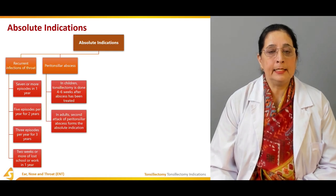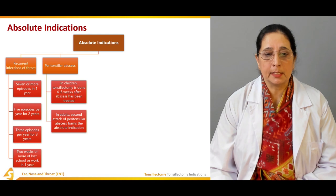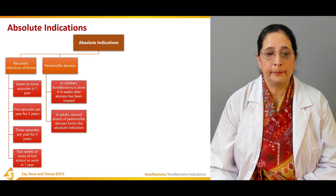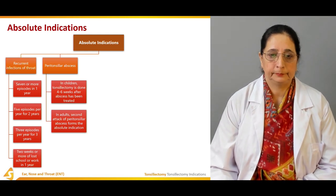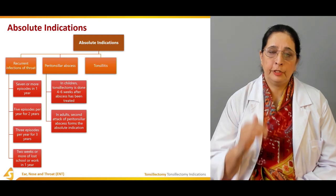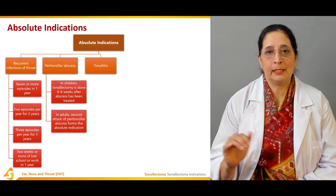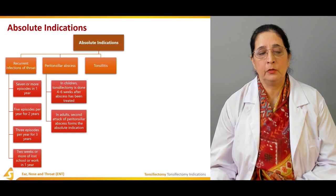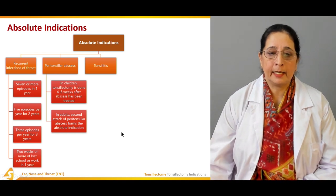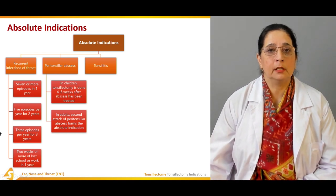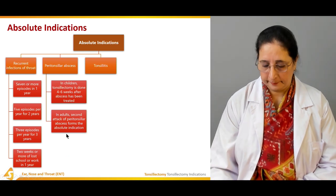In adults, the second attack of peritonsillar abscess forms the absolute indication for tonsillectomy. So even with the first attack in children that is the absolute indication, but in adults it is the second attack of peritonsillar abscess that forms the absolute indication.